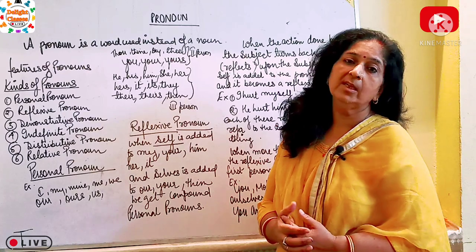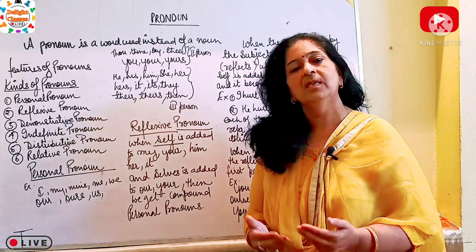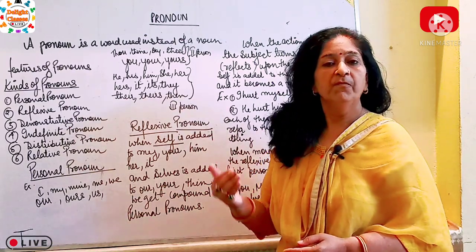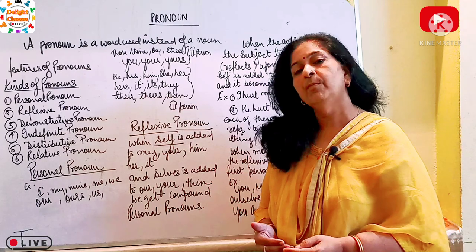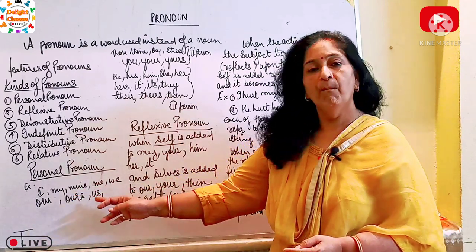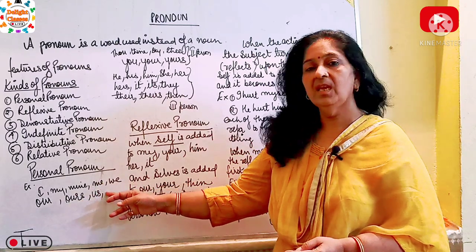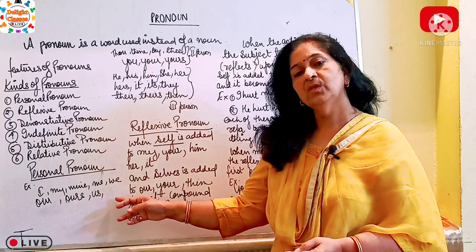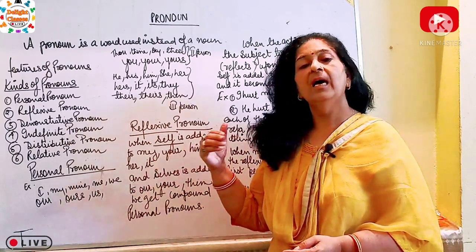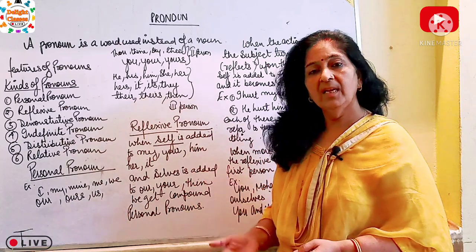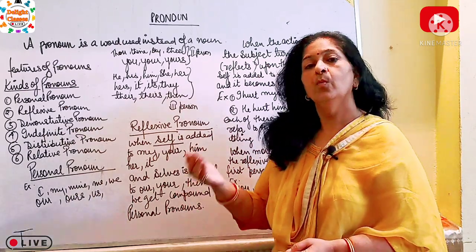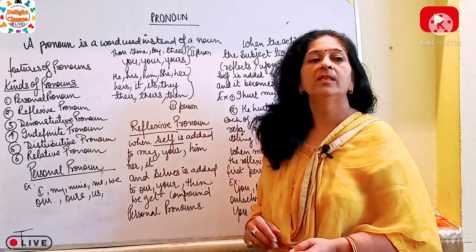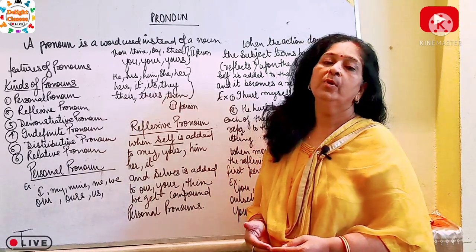Personal pronoun has three persons: first person, second person, and third person. First person personal pronouns are: I, my, mine, me, we, ours (O-U-R-S), us. All these are first person pronouns.